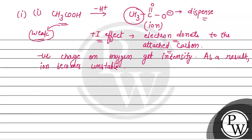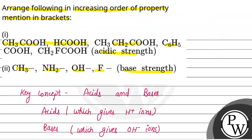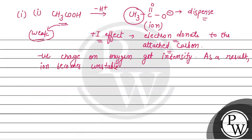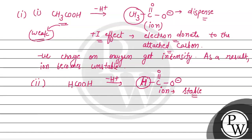हमने order arrange करना है, तो हम देखेंगे बाद में कि ये कौन से order पे है। Next हमें given है HCOOH। H-positive lose करने के बाद HCOO negative बनेगा। यहां पे negative charge को disperse करने के लिए कोई भी electron withdrawing group नहीं लगा, लेकिन donating group भी नहीं लगा। तो यह ion stable है, लेकिन कम extent तक। इसका मतलब यह moderate या mild acid हो गया।